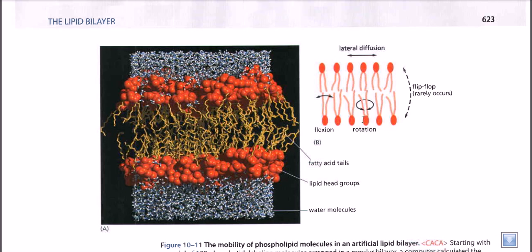Another movement is called rotational movement. In this kind of movement, there is no change in the molecule's particular position. The phospholipid cannot leave its place and go to another, but it still has movement — rotation around its own axis. It can rotate around its own axis and reorient itself. This reorientation is called rotational movement, and it is also very common and easily observed.